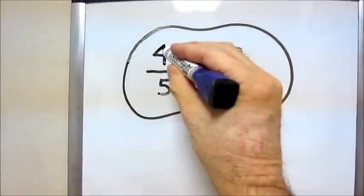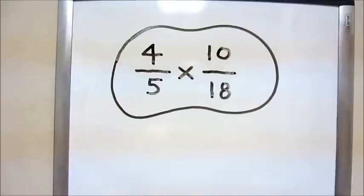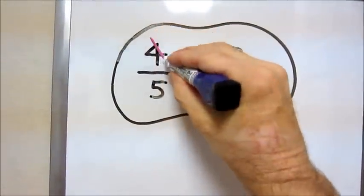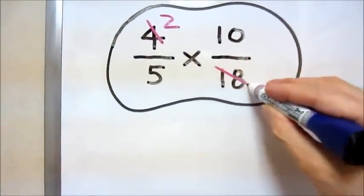So first, we take 4 and 18. There are common factors between the two, the largest being 2. We divide both the 4 by 2 to get 2, and the 18 by 2 to get 9.